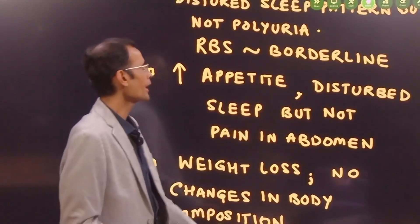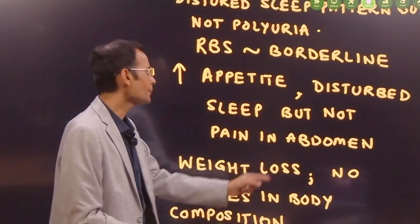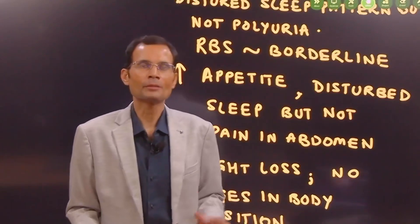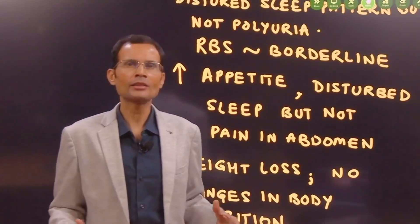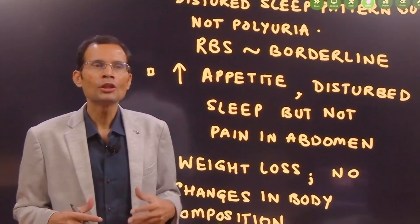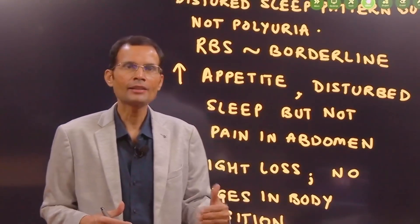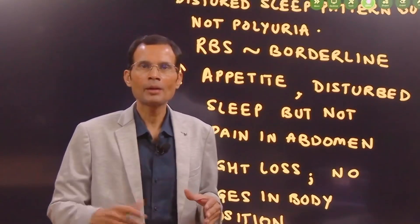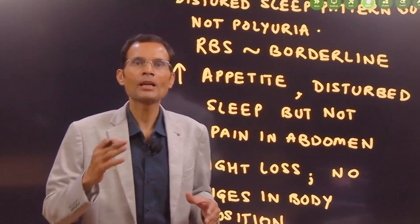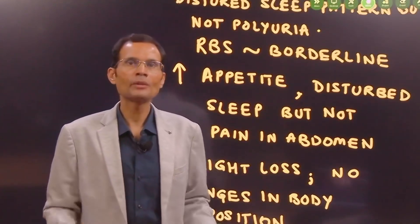Then increase appetite, disturbed sleep, but no pain in abdomen. Look, peptic ulcer patients, particularly duodenal ulcer patients are known to get up in the middle of the night, let's say 2 a.m. in the morning. That is when the stomach and the first part of duodenum becomes empty and the pain in abdomen starts.